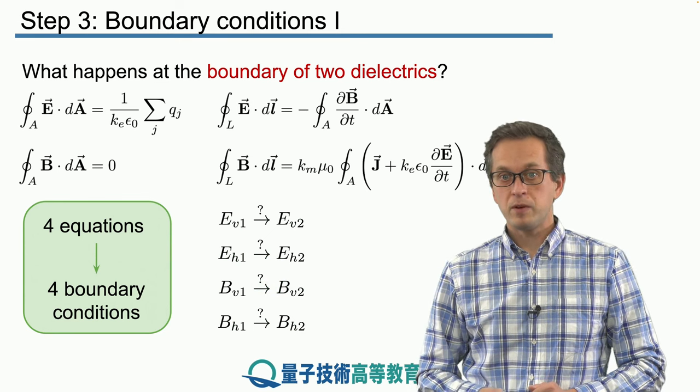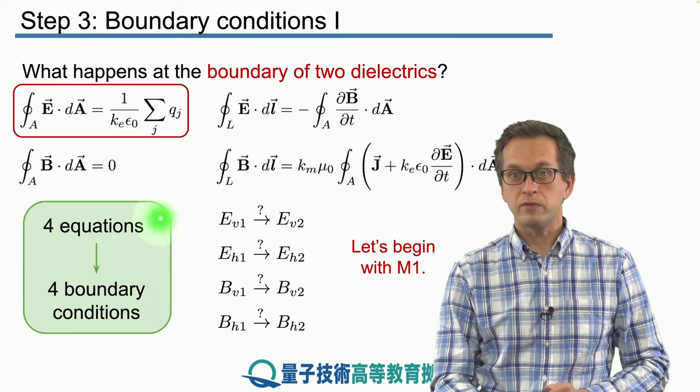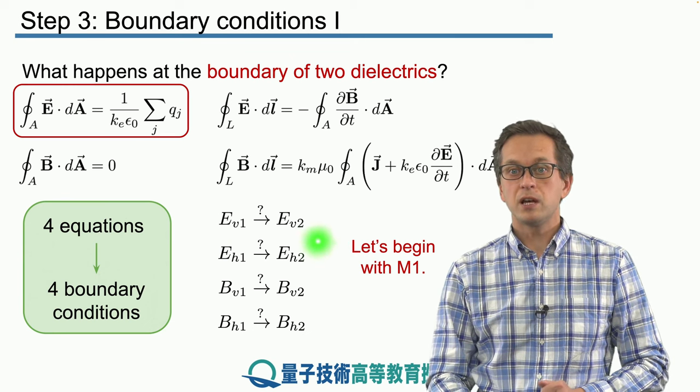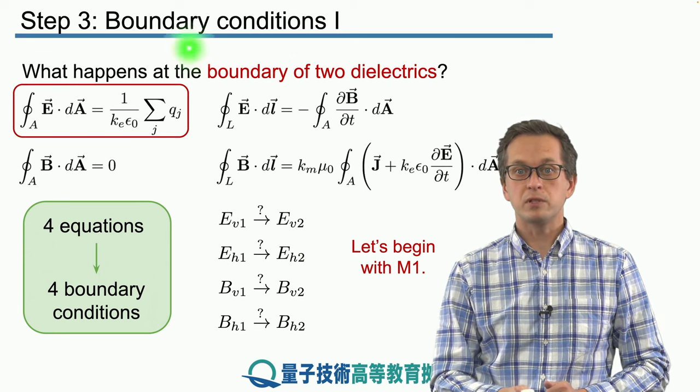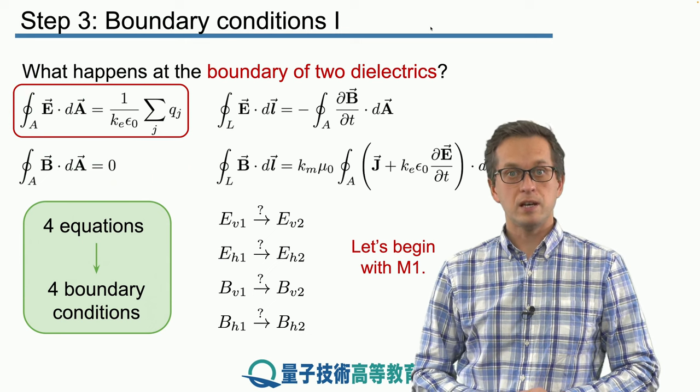In this step, we will go slowly through the first boundary condition and we will start with Maxwell's first equation. So let's see how it works.